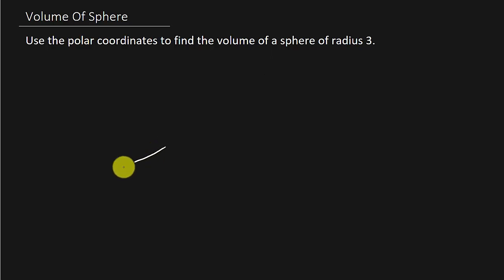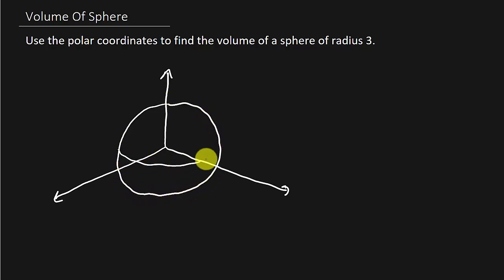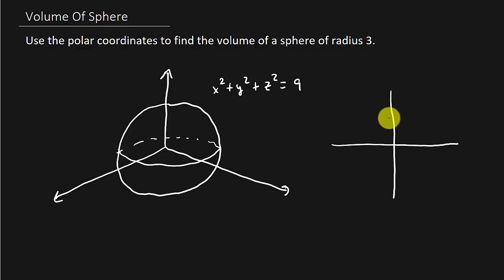Let's go ahead and draw our picture to get an idea of what this thing is going to look like. We know that the equation of this sphere is x squared plus y squared plus z squared equals 9, because we've got a radius of 3 and we centered our sphere at 0, 0. Now let's look at what we have in the x, y plane — we've got a circle, and this will be 3.